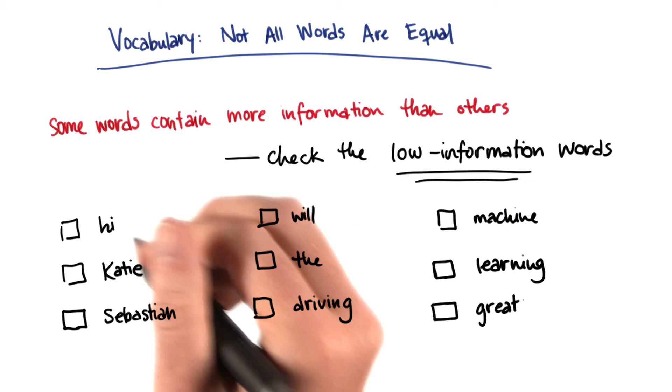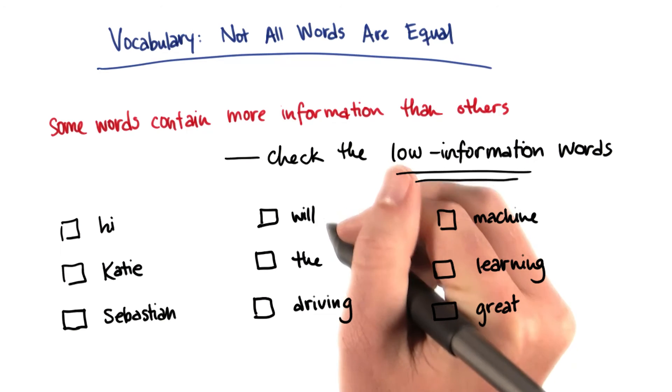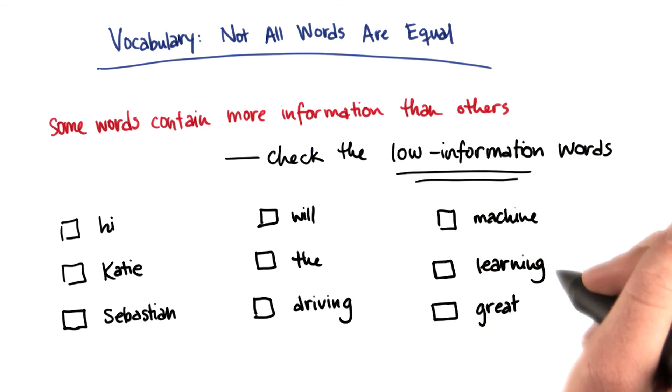So our vocabulary contains the words hi, Katie, Sebastian, will, the, driving, machine, learning, and great.